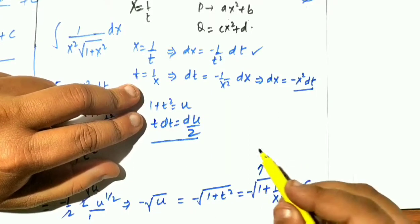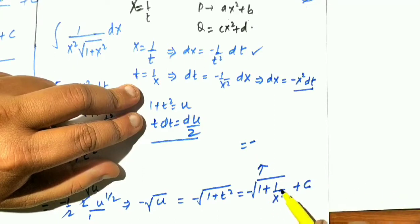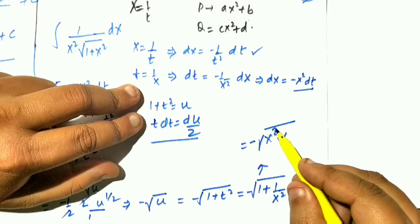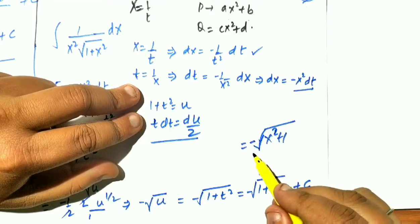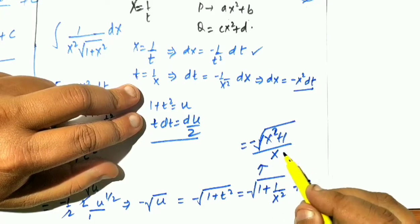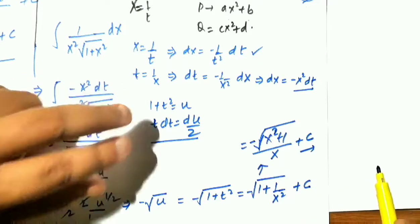You can further simplify it. This expression will become negative of x square plus 1, x square plus 1 square root, divided by x, plus c. This is our final answer.